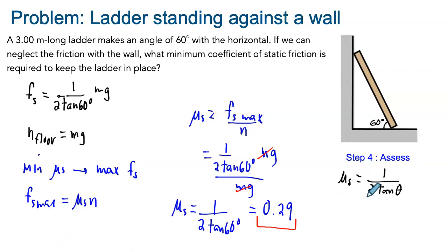Another small interesting thing is that the final answer does not depend neither on the length of the ladder nor on the mass of the ladder. As long as it's homogeneous in the sense that it's uniformly shaped, then the only thing that will be important is the actual angle between the ladder and the horizontal. That completes this clip about the ladder standing against the wall. Thanks.